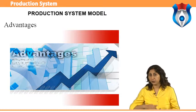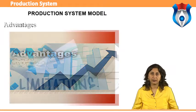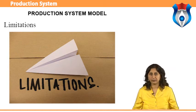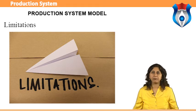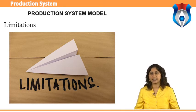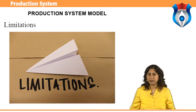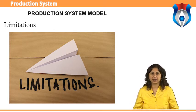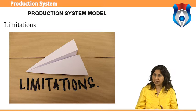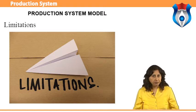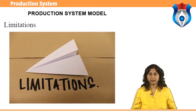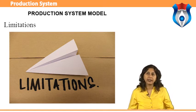Limitations of continuous production include: flexibility to accommodate and process a number of products does not exist; very high investment for setting up flow lines; product differentiation is limited; material handling is fully automated; the process follows a predetermined sequence of operations; component materials cannot be readily identified with the final product; and planning and scheduling is a routine action.